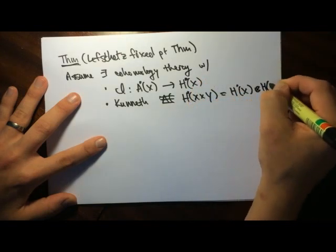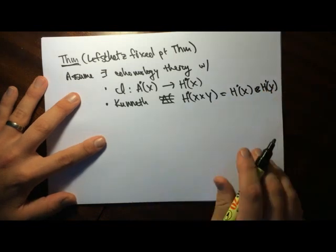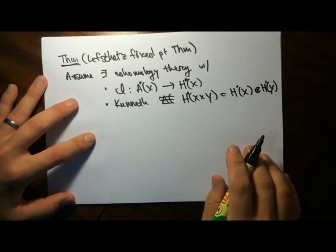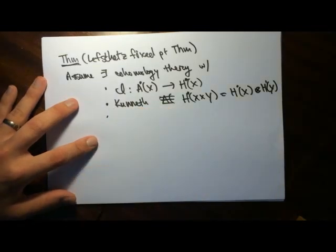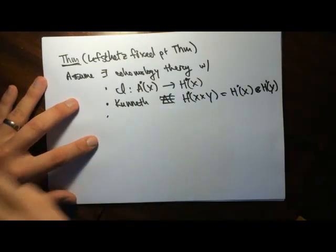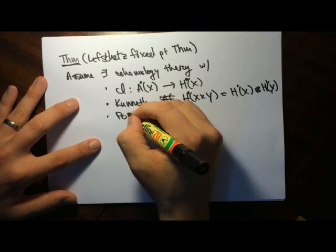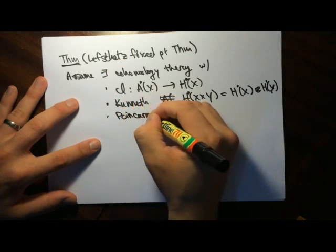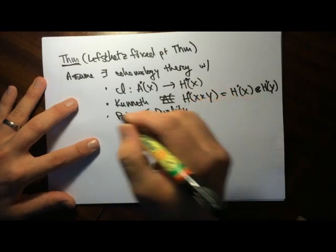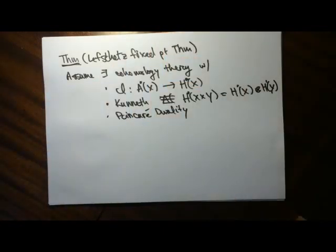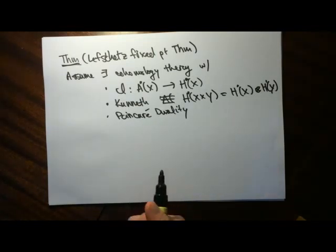It's important that you have graded vector spaces. Some people like to include information about twists in the cohomology theory, but I'm not going to do this. There's also going to be Poincaré duality. So we're just going to assume that there's a cohomology theory with these things, and then the Lefschetz Fixed Point Theorem says the following.